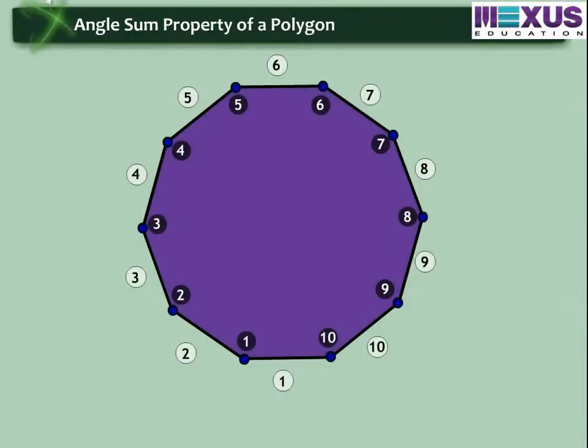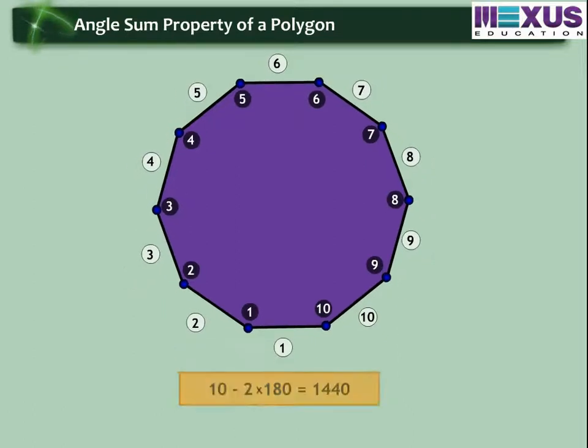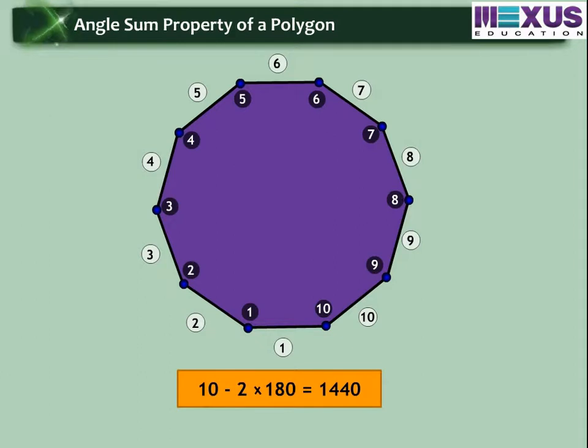So, a polygon with number of sides equal to 10, the sum of its interior angles would be 10 minus 2 multiplied by 180. That is, 1440 degrees.